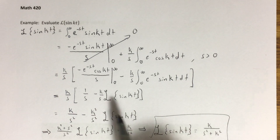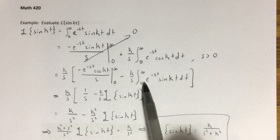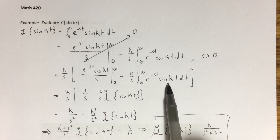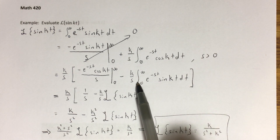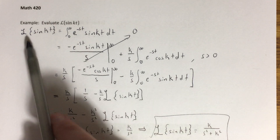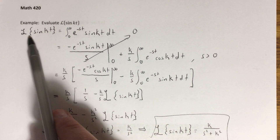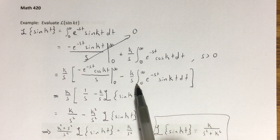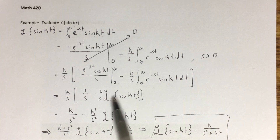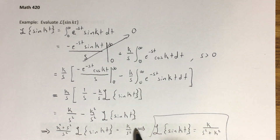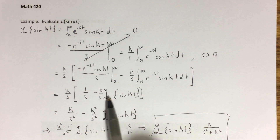Rather than evaluating the remaining integral directly — which would take us back a couple of steps — I notice that integral is by definition the Laplace transform of sine of kt, exactly what we started with. So I write it as L{sin(kt)}.